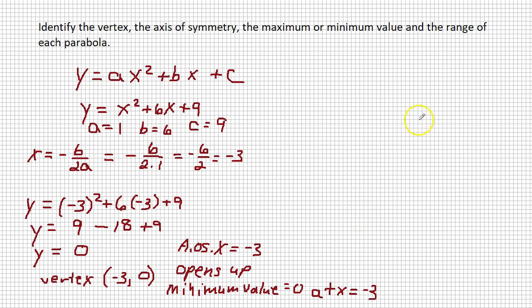Next thing we've got to do is find the range. Since we know this opens up, all of our points are going to be above the minimum value. So our range is going to be y is greater than or equal to negative 3.